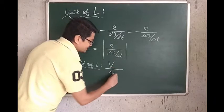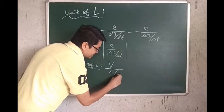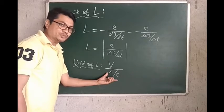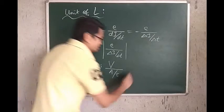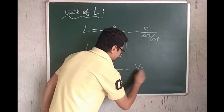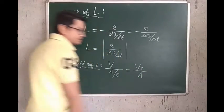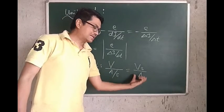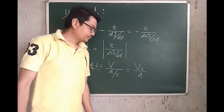The unit for change in time is measured in seconds. Now, since we have a fraction in the denominator, so therefore this S goes to the numerator, so we can write volt second per ampere. So, the unit of self-inductance is volt second per ampere. Alright?